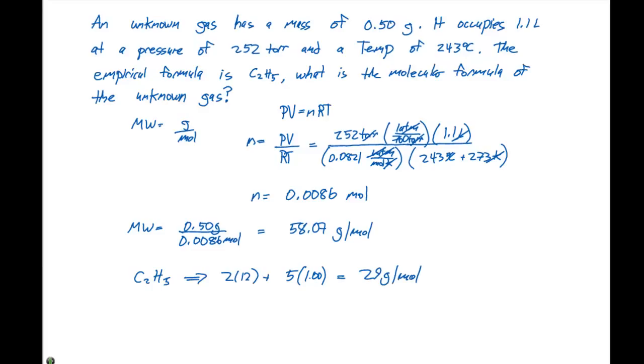If we remember back on how to compare an empirical and a molecular formula, we do this by looking at a factor. If we take this 58.07 grams per mole and divide it by 29 grams per mole, we roughly get a factor of 2.